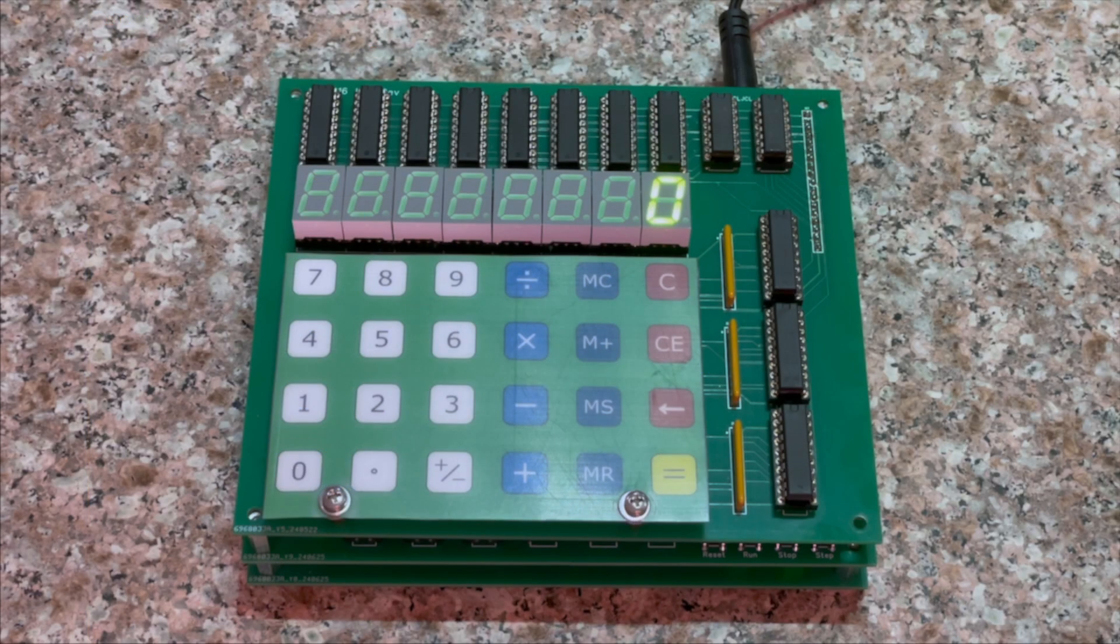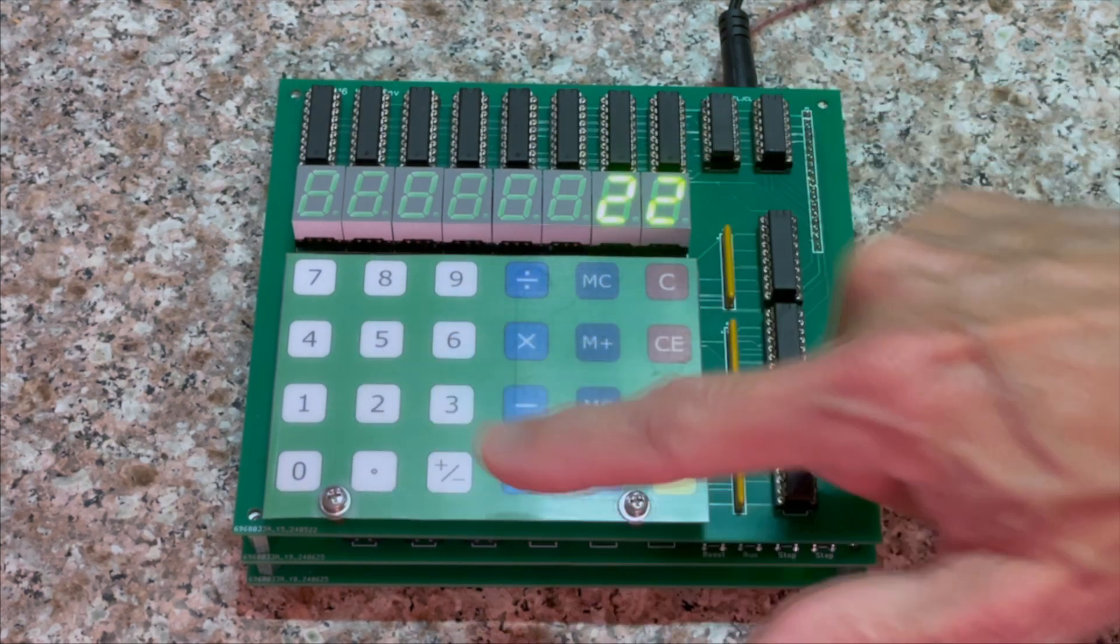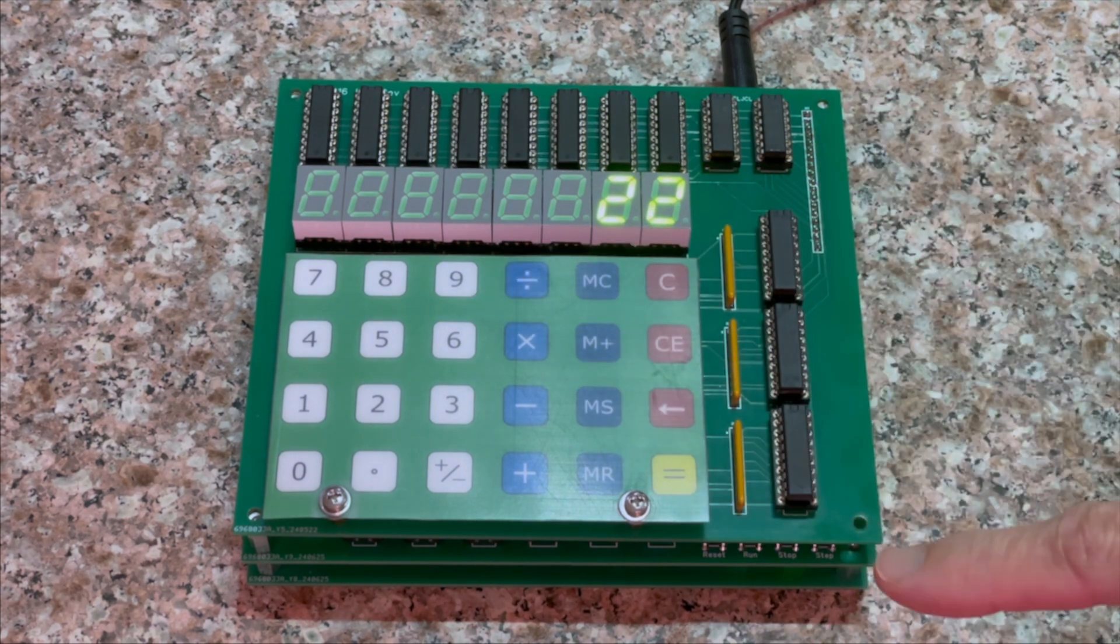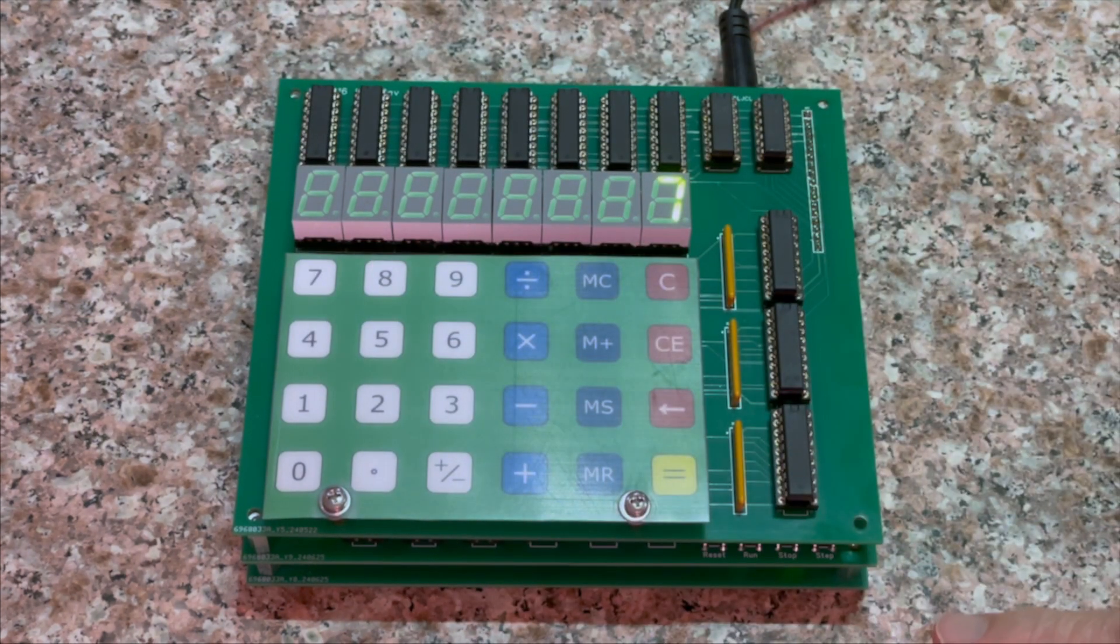Here's the computer in operation. It's running software I wrote to emulate a basic calculator. This is not particularly useful, but it demonstrates that the computer works and can do non-trivial things. I'll enter 22 divided by 7 equals, and here is the result.